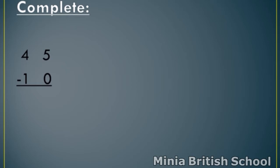The first step: write T and U. The second step: make a line. The third step: start from units. In units, five minus zero — any number minus zero equals the same number. So, five minus zero equals five. Write five under units.